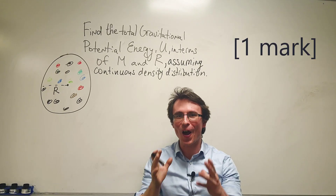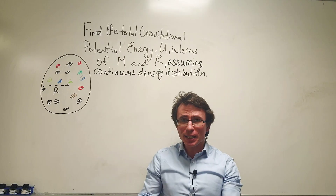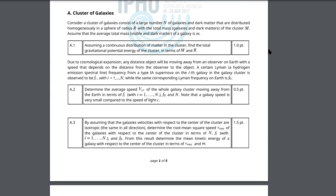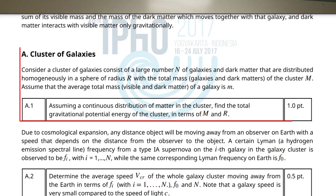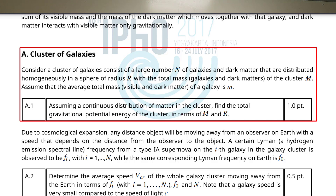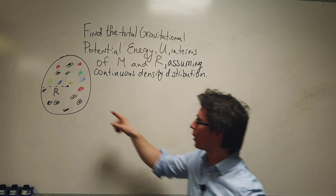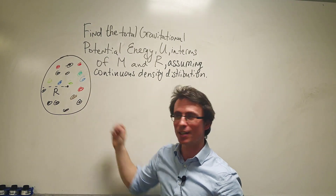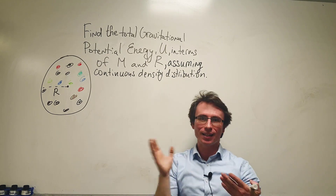Can you solve one mark from the hardest Physics Olympiad there is, namely the International Physics Olympiad? Let's have a look at this question from the 2017 International Physics Olympiad in Indonesia. This question is about galaxies, in particular clusters of galaxies. The question is to find the total gravitational potential energy in terms of M and R, where R is the radius of a cluster of galaxies pictured here, and M is the total mass contained within this cluster.